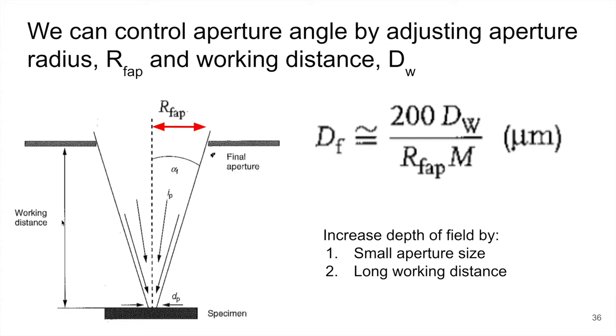So if we account for those two variables and we replace those two variables for alpha, we get this expression. So you'll notice that basically it's the working distance D sub W over RF replaces that alpha term.